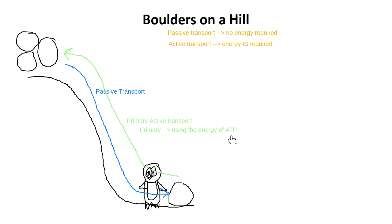ATP is our power. It's our energy. The energy for primary active transport came from the mitochondria — they made ATP.